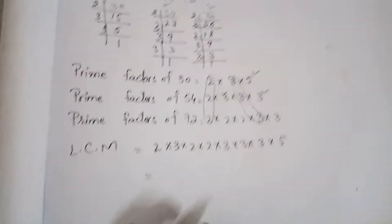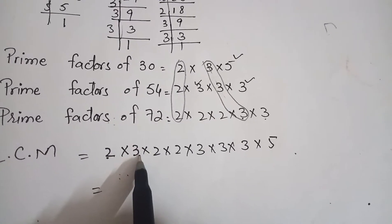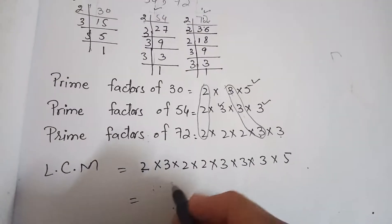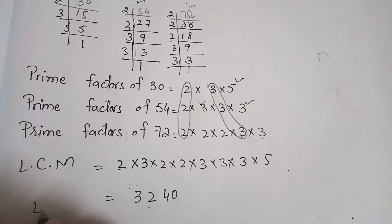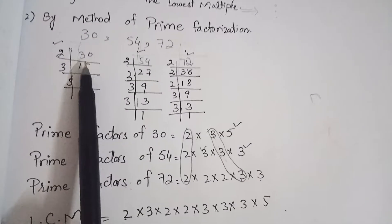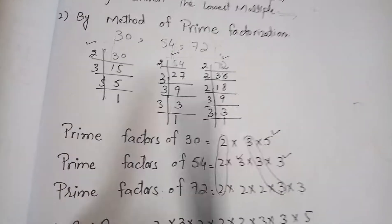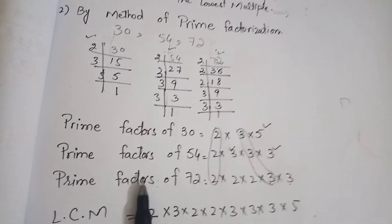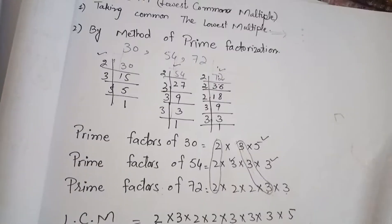So what is the LCM of these three numbers? You multiply them: two 3s are 6, six 2s are 12, twelve 2s are 24, and then multiply by 5 — the LCM is 3240. This is the lowest common multiple of 30, 54, and 72. The first method was taking the common multiple, and the second method is prime factorization. First, we will practice both methods in this exercise.